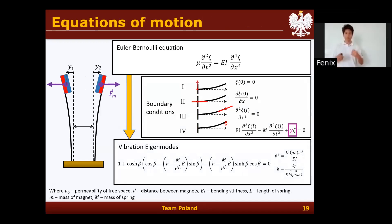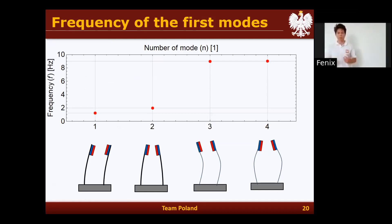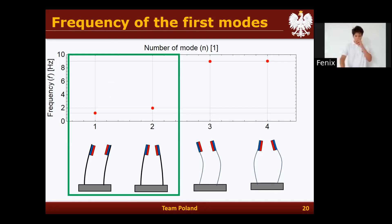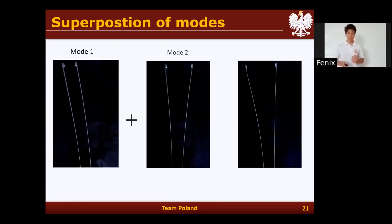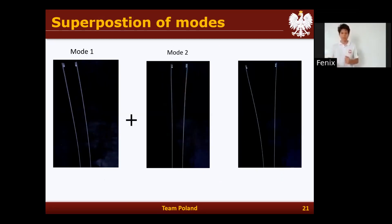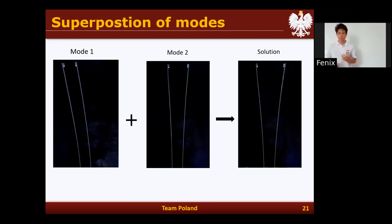Now we're able to predict any frequencies. Looking at only the first four modes, we can see that higher modes have much higher frequencies, which also means they decay faster. The most important frequencies in our problem will be the first two: the first corresponds to oscillations in phase, the second describes oscillations in antiphase, and the final solution is a superposition of these two modes.